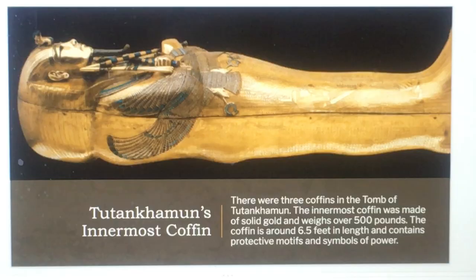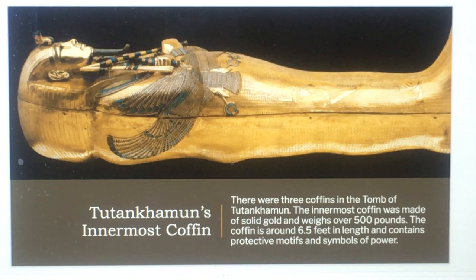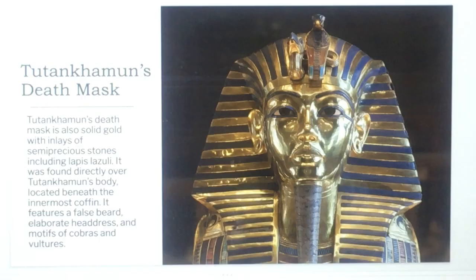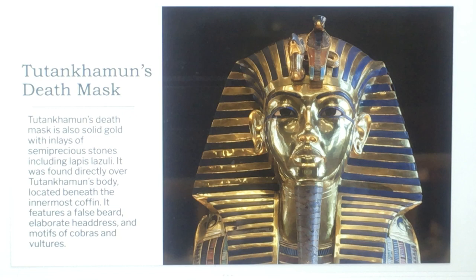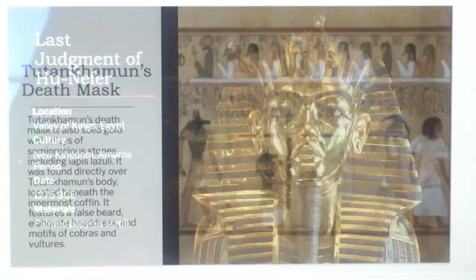The Valley of the Kings is where Tutankhamun was buried. There were three coffins in the tomb; the innermost coffin was made of solid gold and weighs over 500 pounds. The coffin is around 6.5 feet in length and contains protective motifs and symbols of power. His death mask is also solid gold with inlays of semi-precious stones including lapis lazuli, found directly over Tutankhamun's body. It features a false beard, elaborate headdress, and motifs of cobras and vultures.